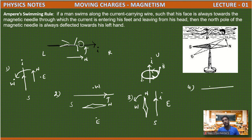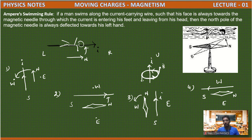One more example: the current direction is like this. I place the magnetic needle here. This is east, this is west, this is south. In which direction does the north pole of the magnetic needle deflect? Towards his left hand. The person is swimming in this direction, so his left hand moves like this, and the south pole moves like this — then the north pole deflects towards west. Like this we can find the direction of magnetic field by using Ampere's swimming rule.